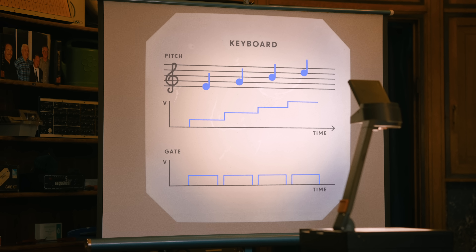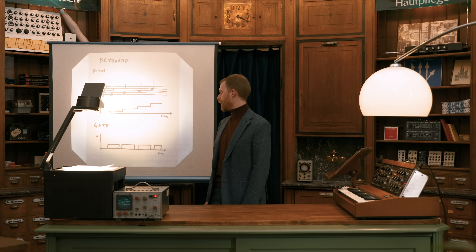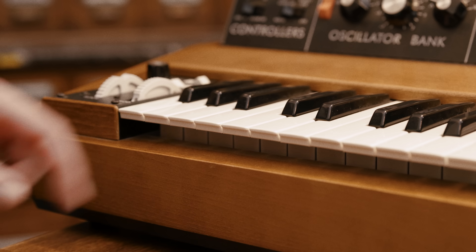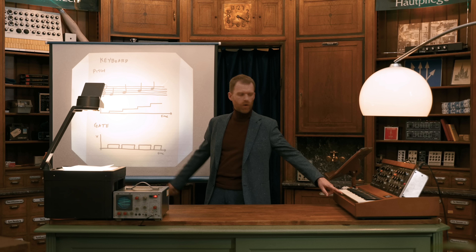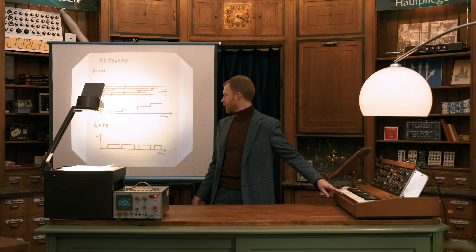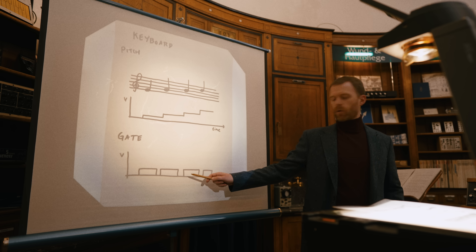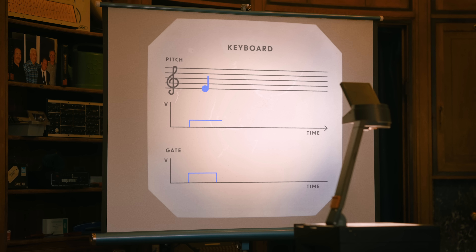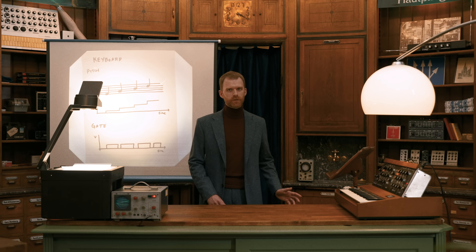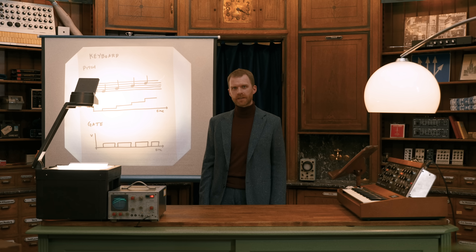The keyboard also sends what's called a gate signal, which is at zero volts while no keys are being pressed down. When I press a key, the gate voltage jumps to a high state, and it stays high for as long as I have a key held down. When I release the key, the gate signal goes down to zero volts, and then will go back up again when I press a new key. Everything in the synthesizer communicates through the language of voltage. These two ideas — modular design and voltage control — were the key insights behind the earliest synthesizers.